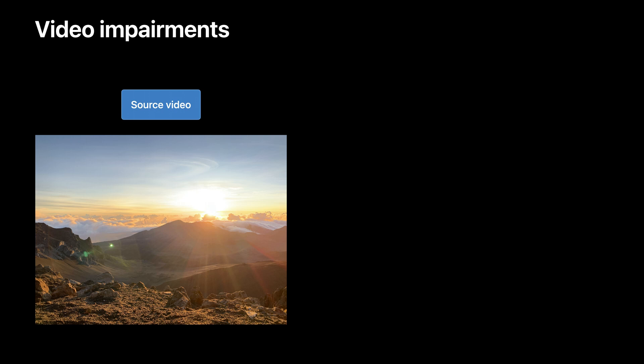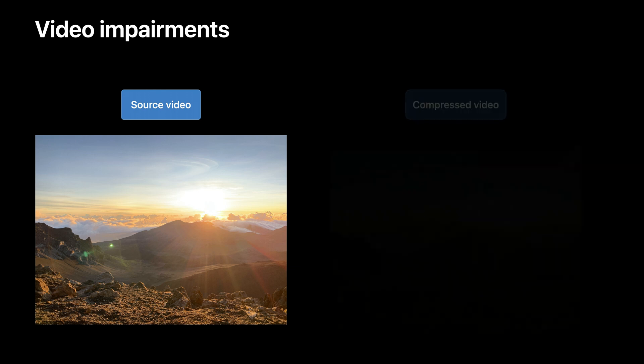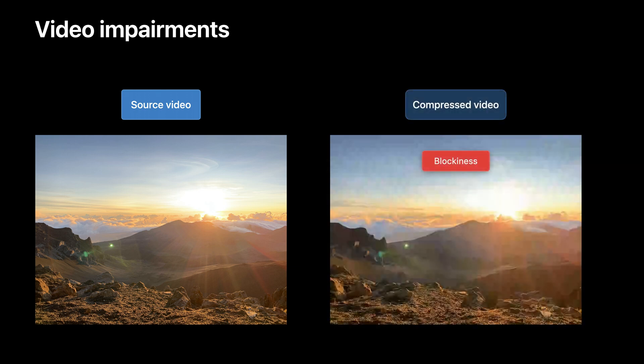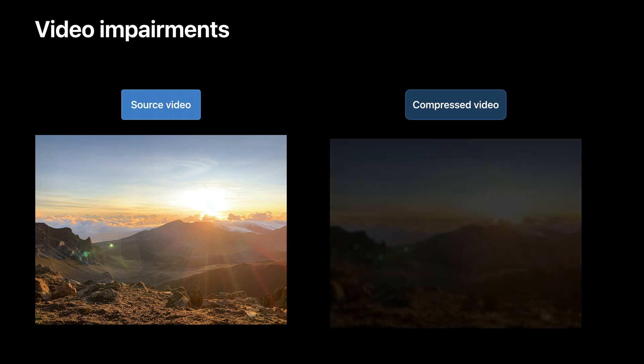Downscaling and compression can add video coding and scaling artifacts, and this will impair the source video and create visible artifacts. One example of such an artifact is blockiness in the compressed video, which is shown in the frame on the right side. Another example is when the video appears blurry and video details start disappearing. Such artifacts can adversely affect a consumer's video quality experience.